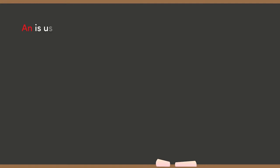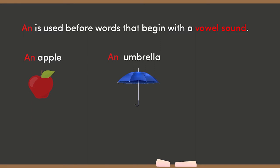AN is used before words that begin with a vowel sound. For example, an apple, an umbrella, an egg.